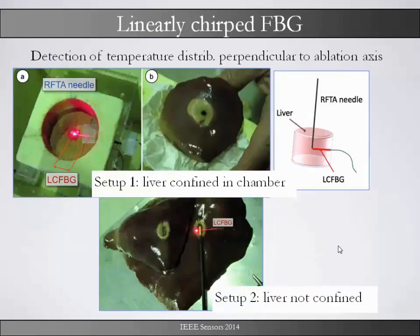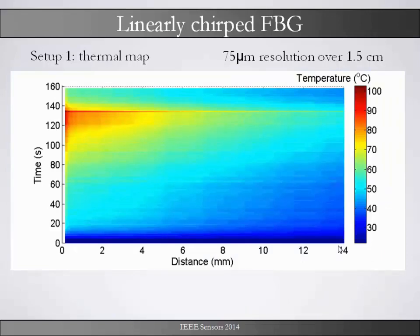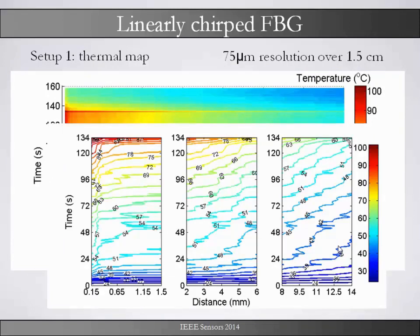For a second measurement we used a different technique. As shown before, alongside the RF needle there is a wide area of temperature, whereas perpendicular there is a smaller area. In this case we use a linear chirped FBG with a small area but higher resolution. We get a resolution of 75 µm in a 1.5 cm area. From 0 to 1.5 mm — very close to the needle — there is an increase of temperature already after one minute, which is the mortality threshold. But after 1.5 cm there is nearly no temperature anymore.